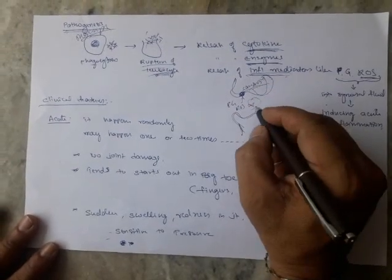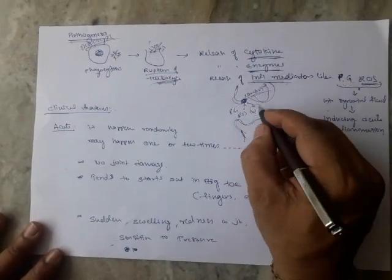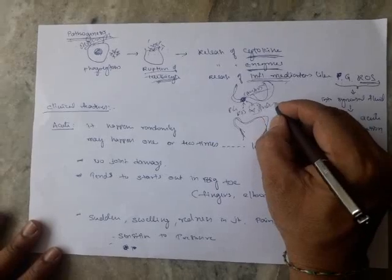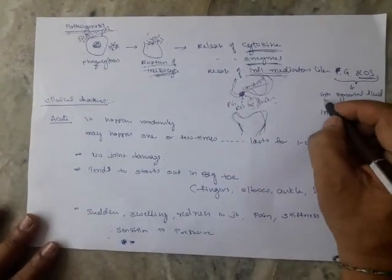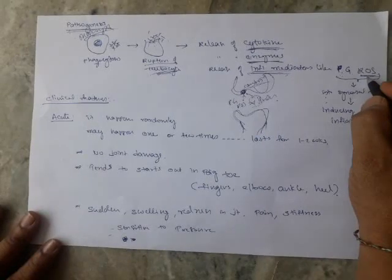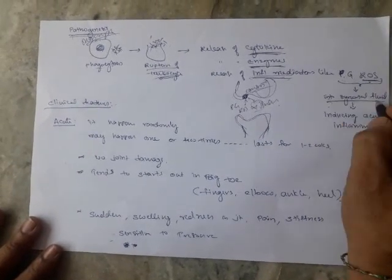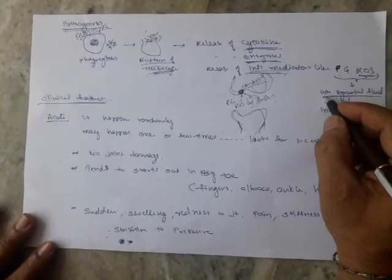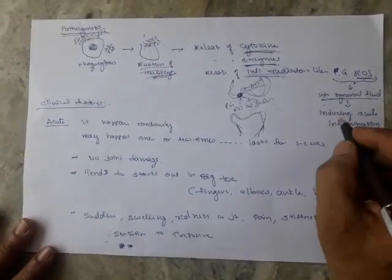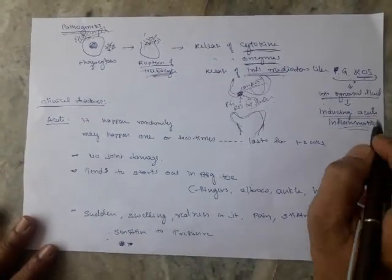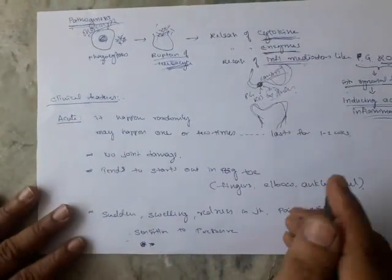This occurs within the joints and produces inflammatory conditions with redness and swelling. The prostaglandin and reactive oxygen species secreted in the synovial fluid induce the acute inflammation. This is about the pathogenesis.